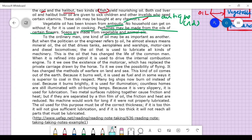To the ordinary man, one kind of oil may be as important as another. But when a politician refers to oil, he almost always means mineral oil - the oil that drives tanks, aeroplanes, warships, motorcars, and diesel locomotives, and is used to lubricate all kinds of machinery. This is the oil that has changed the life of the common man. Refined into petrol for the internal combustion engine, to it we owe the motor car and the possibility of flying.